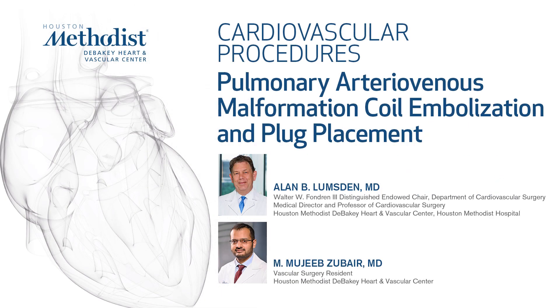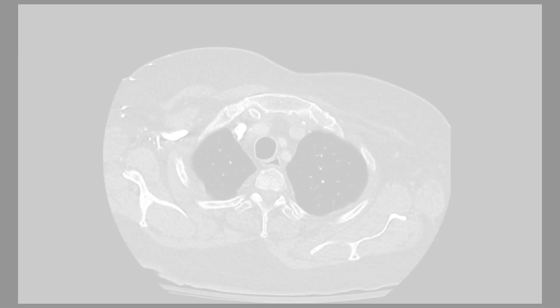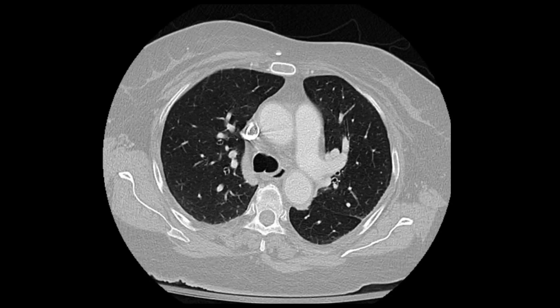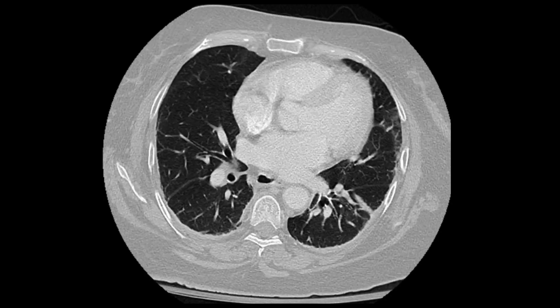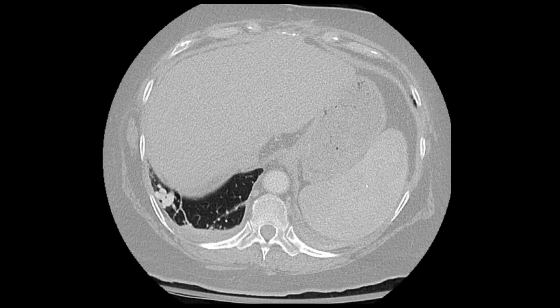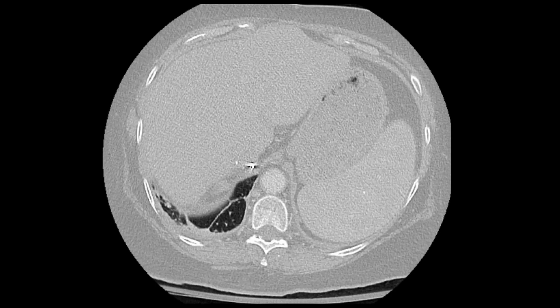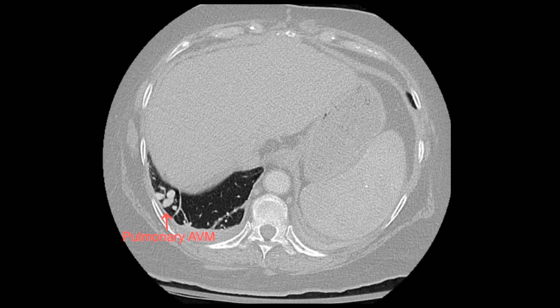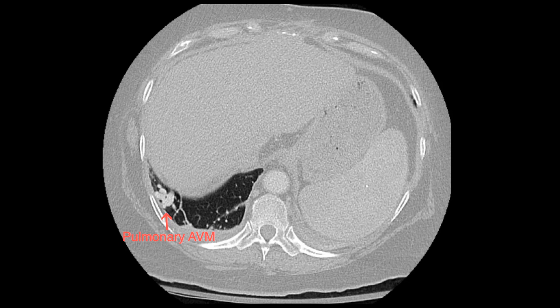This video demonstrates embolization and implant plug placement for a right lung lower lobe arteriovenous malformation in a 64-year-old female who presented with complaints of shortness of breath. She also has a history of liver and kidney transplant. CT scan of the chest demonstrated a 1.8 centimeter right lung lower lobe pulmonary AVM. We decided to treat this endovascularly.